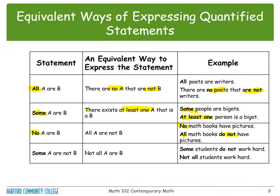Some A are not B — we have the quantifier 'some not.' An equivalent way to express this statement is: not all A are B. For example, if we have some students do not work hard, an equivalent way is: not all students work hard.